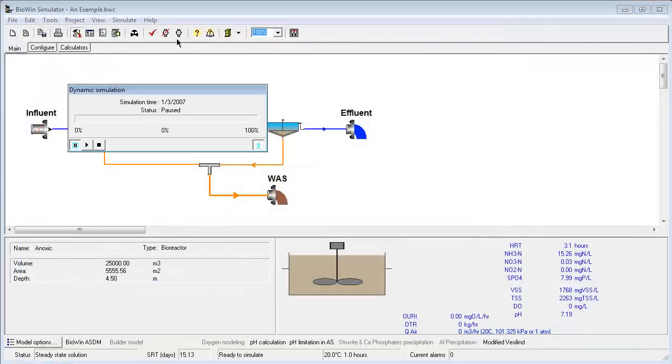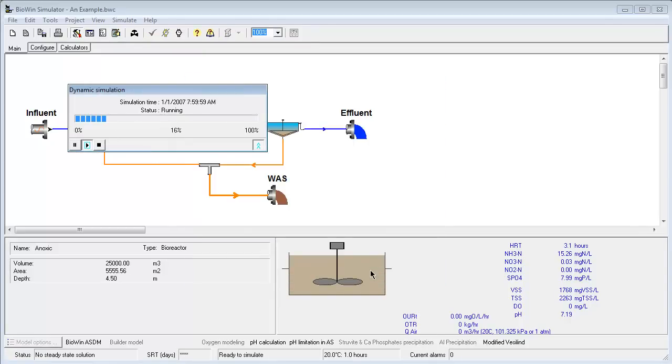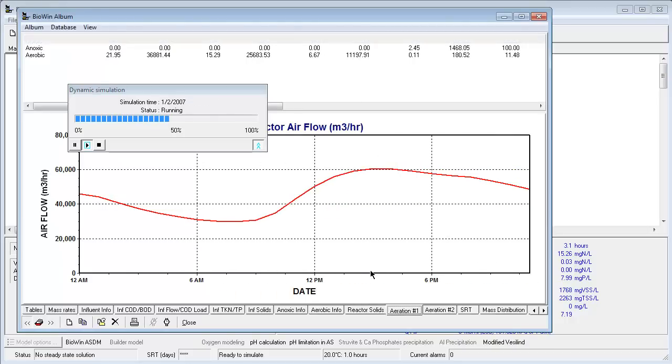We can also run dynamic simulations which will predict how the plant is going to respond under time varying flow, load, and operational conditions. When a dynamic simulation is running, we can focus on different plant performance parameters that are of interest to us.